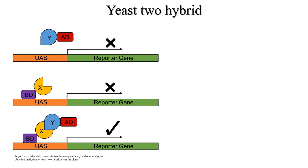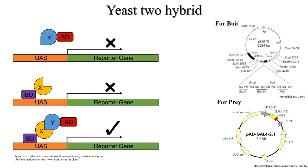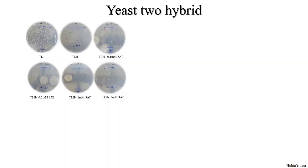For this experiment, PGBT9 vector was used as BD and PADGAL4 was used as AD. In the yeast two-hybrid experiment, BD and AD vectors contain tryptophan or leucine. If the two proteins are tightly bound, the reporter gene is expressed and can grow in a medium without specific amino acids such as histidine or adenine. If you succeed in your experiment, you will get the following result.